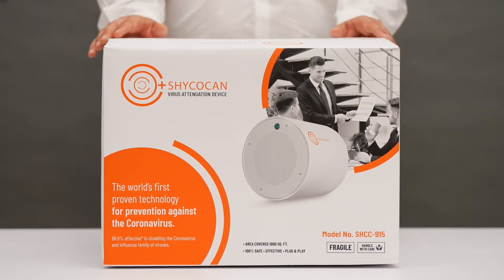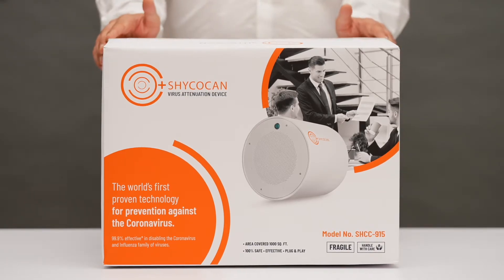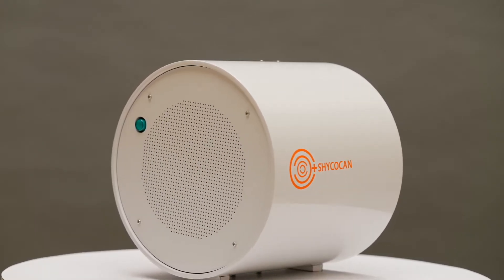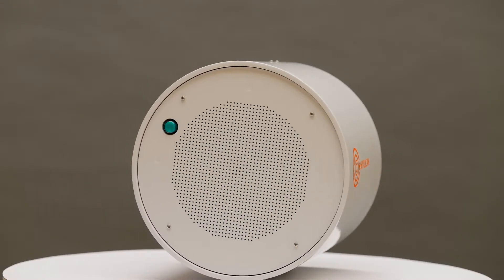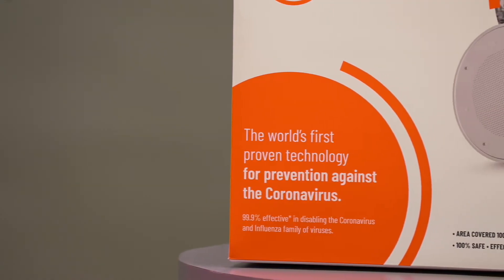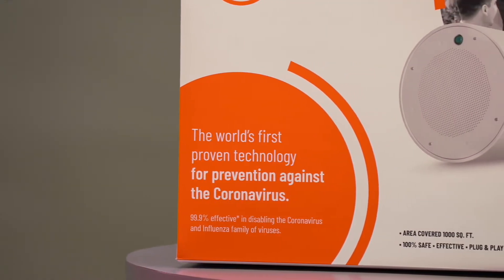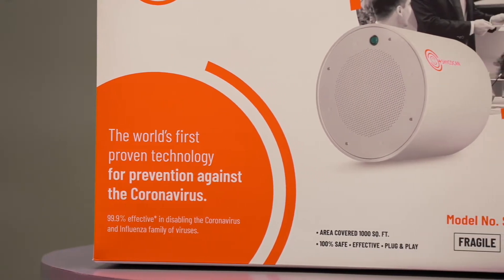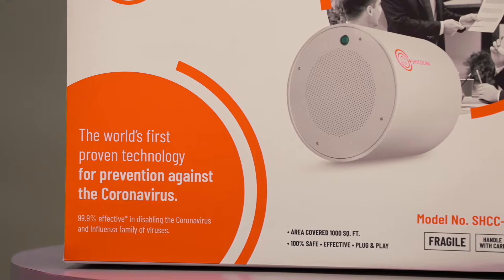Hi everyone, today we will show you how to install the Shagokan, a revolutionary first-of-its-kind product which is the world's first proven technology for prevention against the coronavirus. The Shagokan is 99.9% effective against the entire coronavirus family and influenza family of viruses in enclosed spaces.